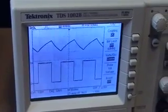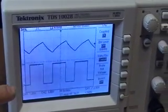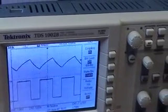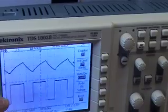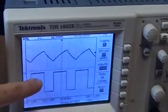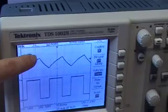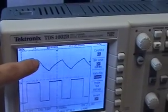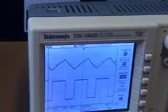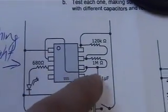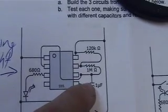The oscilloscope here is measuring two things: one, the 680 ohm resistor, which is this one here, and this waveform here is the 0.1 capacitor. And it's shown on this diagram here. This is the 680 there, and the 0.1 capacitor there.